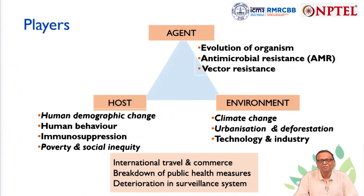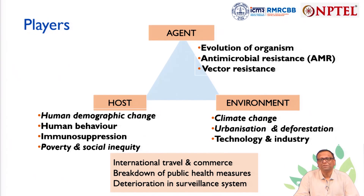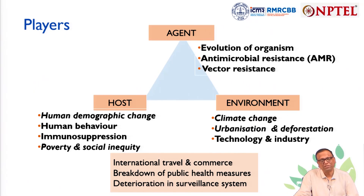There are three key players in disease emergence. The first is the agent itself, at the top of the pyramid — the organism actually causing the disease. It evolves on its own; it can develop antimicrobial resistance if it is a bacterium, or vector resistance if it is a vector-borne disease. There are quite a number of factors of the agent itself that can change over time in nature.